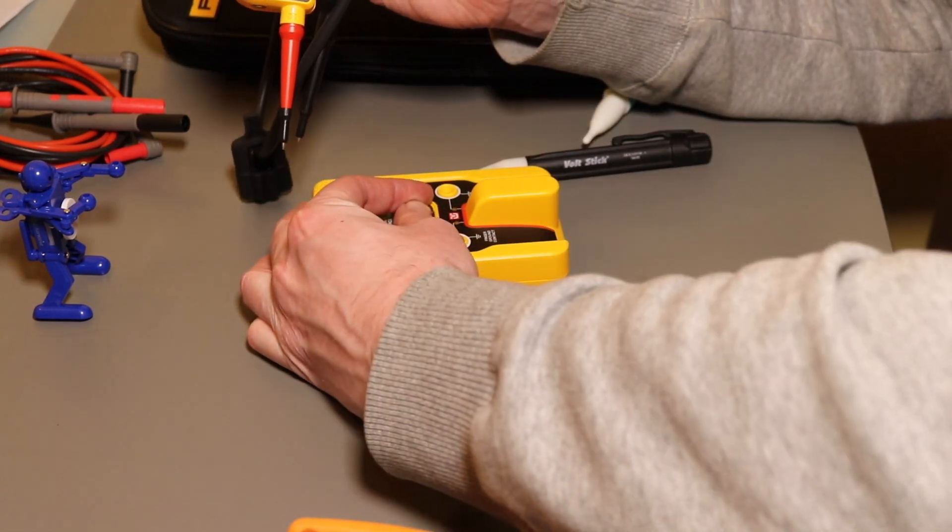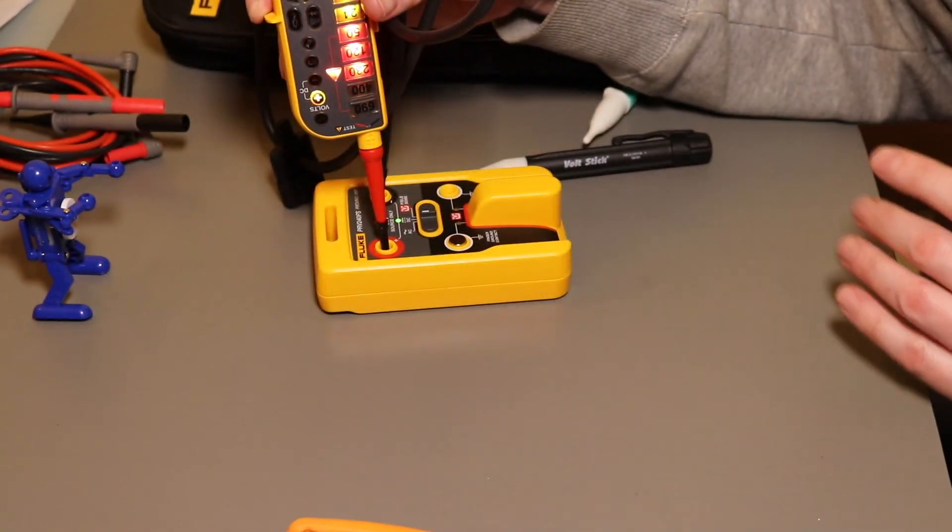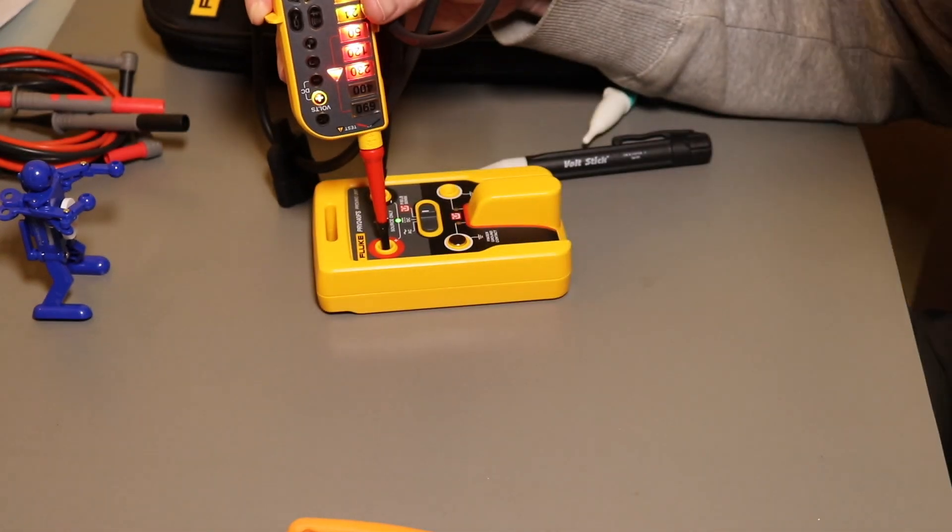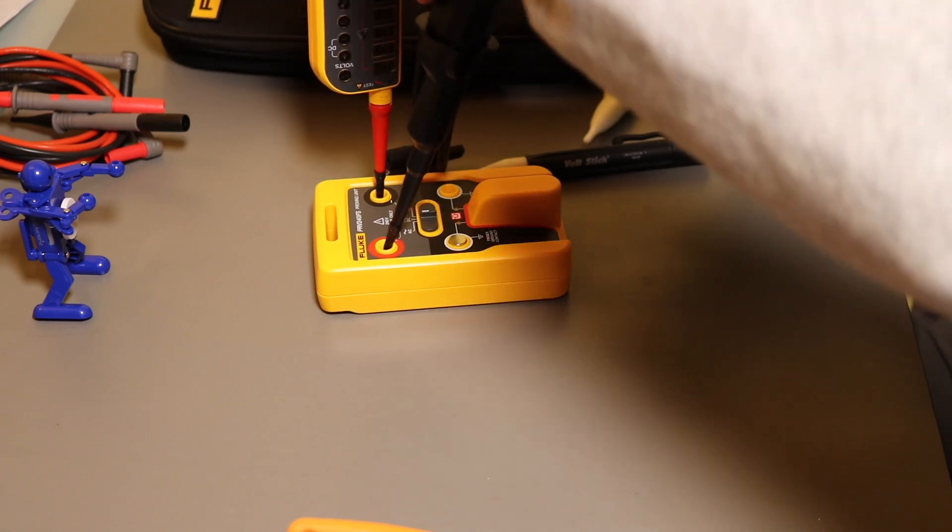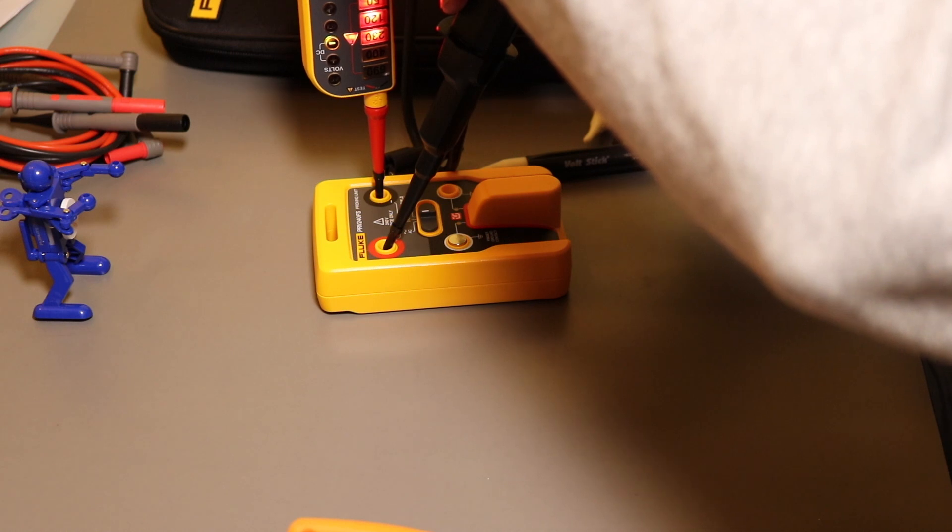And I'll flick it to DC and do the same. And the only difference you see is the plus light is lit up to show that this probe is on the plus. If I flip them over then the light, the negative light will come on to show that it's actually on to the minus of the DC.